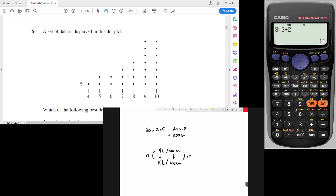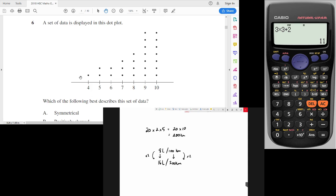Question six, a set of data is displayed in this dot plot which of the following best describes this data? Well before we even look at this one, before we even have a look at the answers I should say,